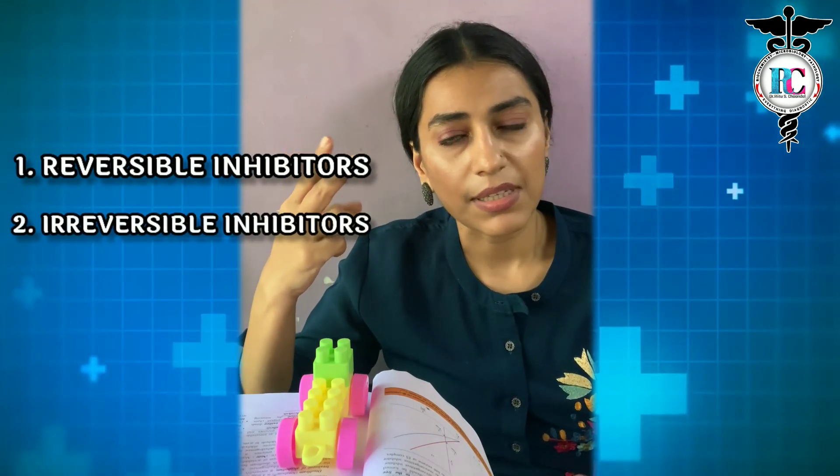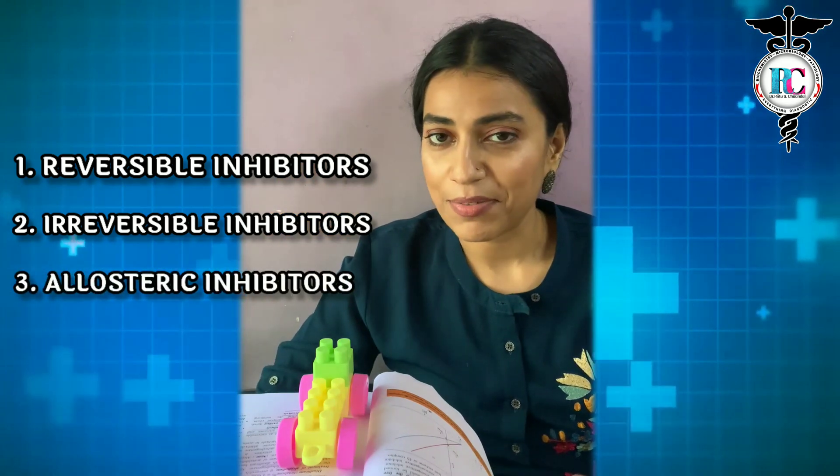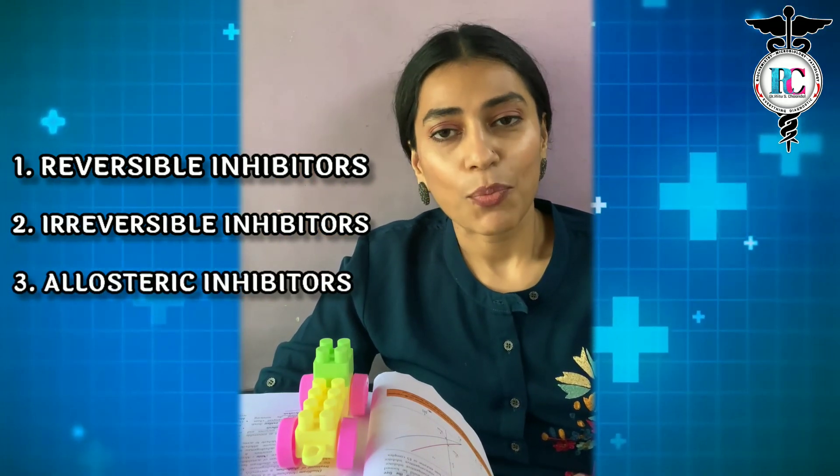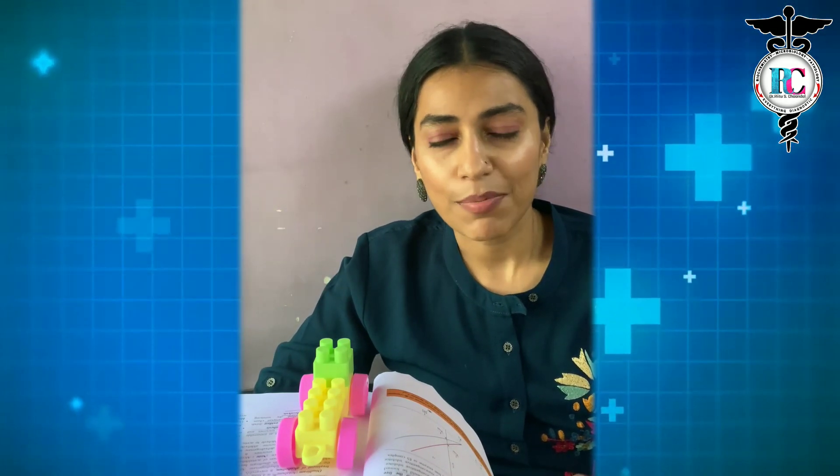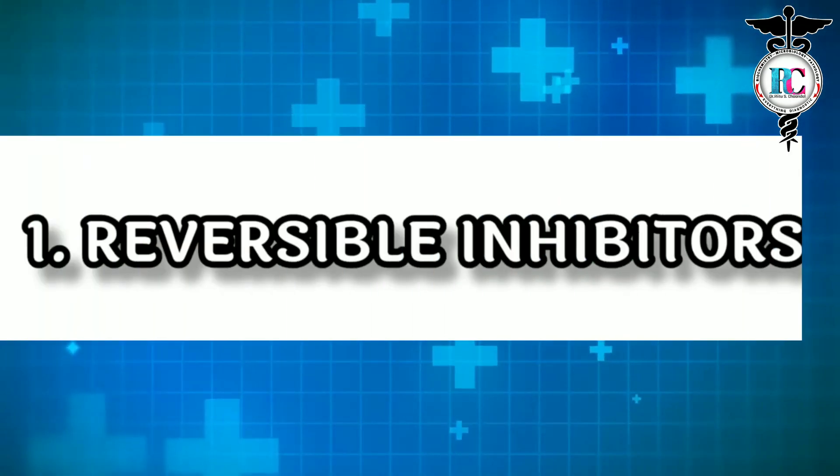Now, how many types of inhibitors are there? There are reversible, irreversible, and allosteric inhibitors. Let's first look at the reversible inhibitor. A reversible inhibitor will bind to the enzyme or to the enzyme-substrate complex non-covalently.